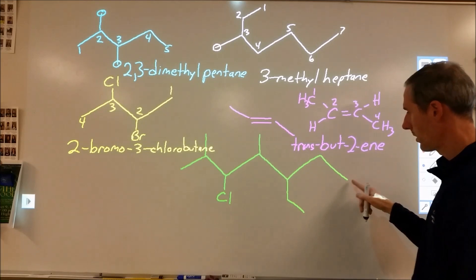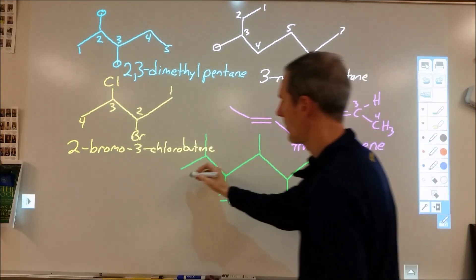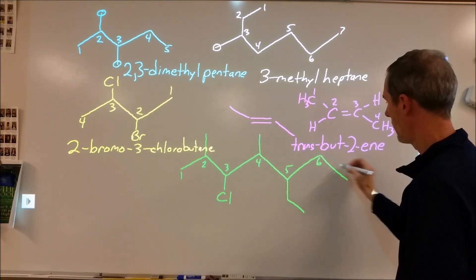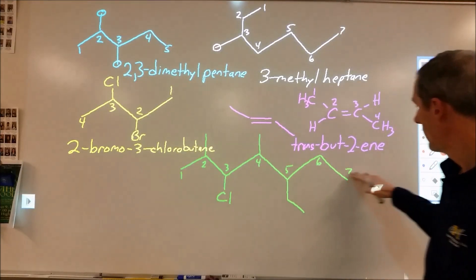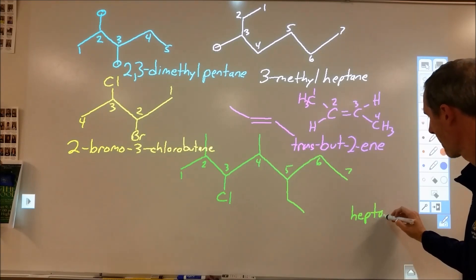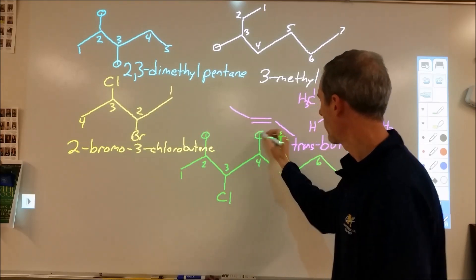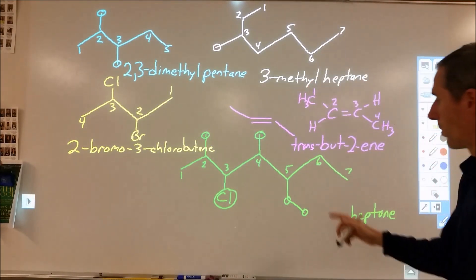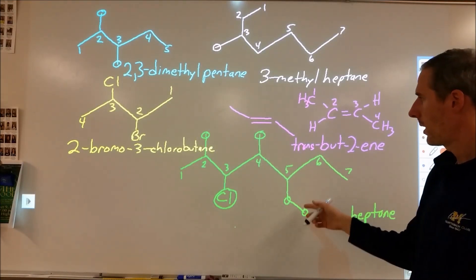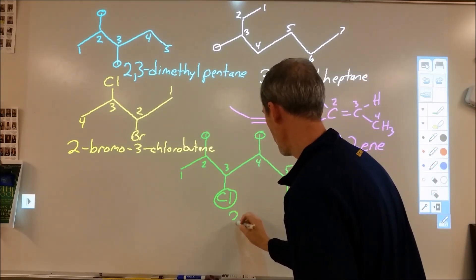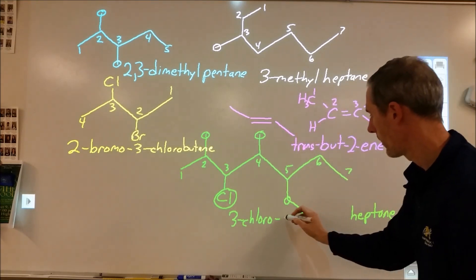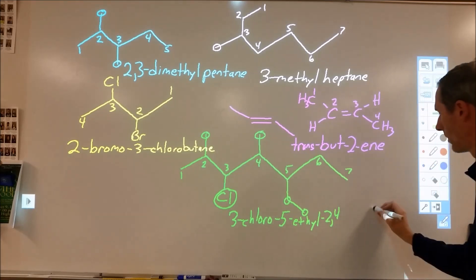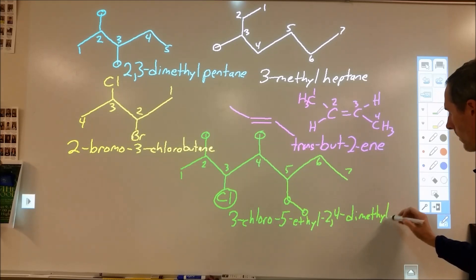The final compound looks complicated. First, find the end closest to a branch — numbering from there: one, two, three, four, five, six, seven, so the base name is heptane. There are no double bonds. The substituents are: a methyl group, another methyl group, an ethyl group, and a chloro group. We have a chloro at carbon three, an ethyl at carbon five, and a dimethyl at carbons two and four. Written alphabetically: 3-chloro-5-ethyl-2,4-dimethylheptane.